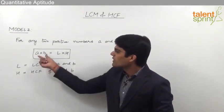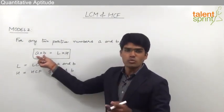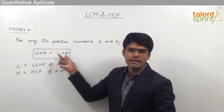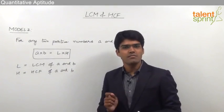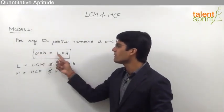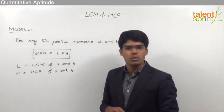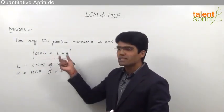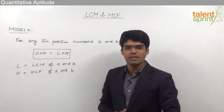As you can see here, the product of any two positive numbers will always be equal to the product of their LCM and HCF. From an examination point of view, out of these four variables, any three would be given to us and we are supposed to find out the fourth one. By substituting the values at the proper places, we can find out the required answer.